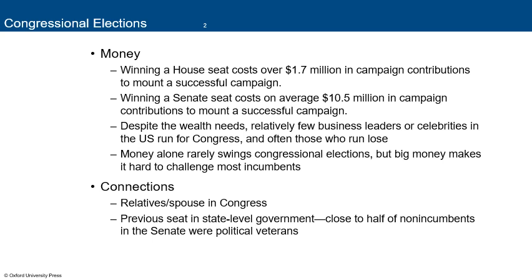Money alone rarely swings congressional elections, but big money makes it hard to challenge an incumbent. If the incumbent can secure enough contributions, the fact that 96 to 98 percent of congressional and Senate incumbents are reelected works heavily in their favor. Connections also matter — having a relative or spouse in Congress, or a previous seat in state government. Close to half of non-incumbents in the Senate were political veterans. Donald Trump was an anomaly — he would have had a much bigger chance running for president than for Congress.